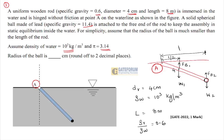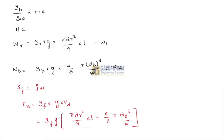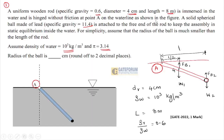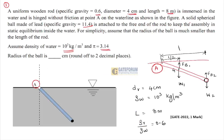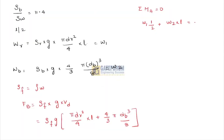Setting moment about point A equal to zero: W₁ × (L/2) + W₂ × L = F_B1 × (L/2) + F_B2 × L. Here W₁ is the weight of the rod and W₂ is the weight of the ball, while F_B1 and F_B2 are their respective buoyancy forces.